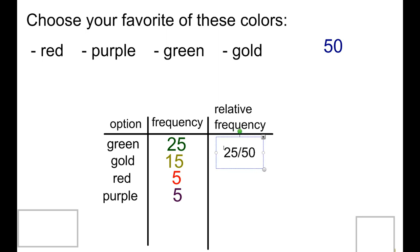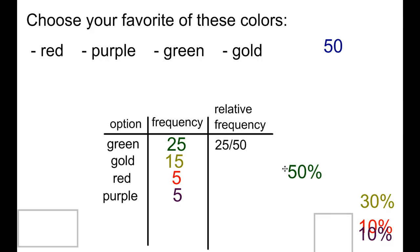If we were to divide 25 by 50, we would get one-half. And we could either write that as a decimal, or more commonly, we would write that as a percent. So we'll go ahead and put 50 percent for green.